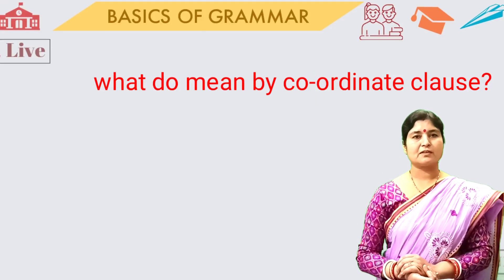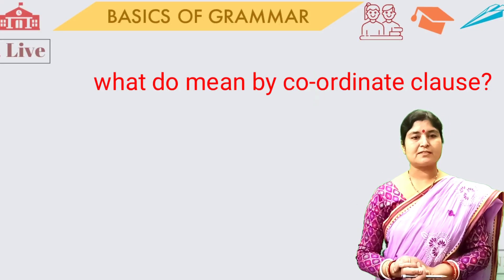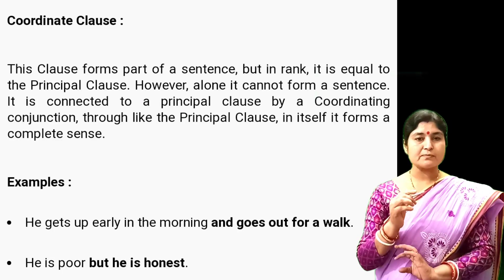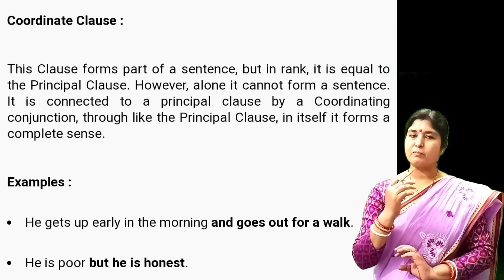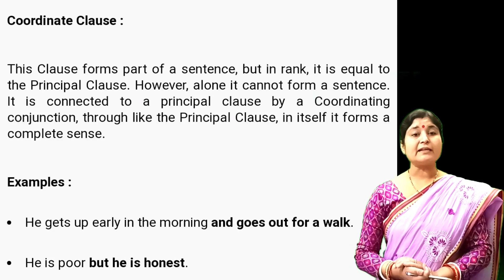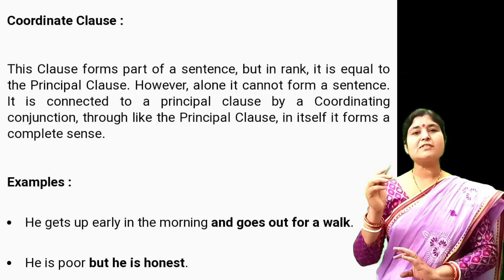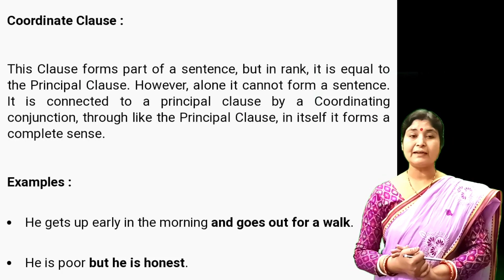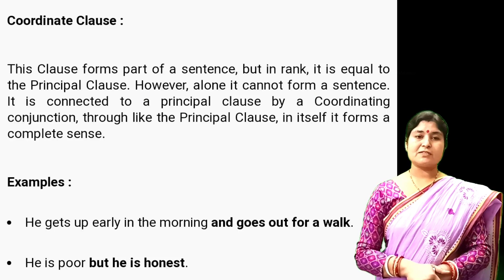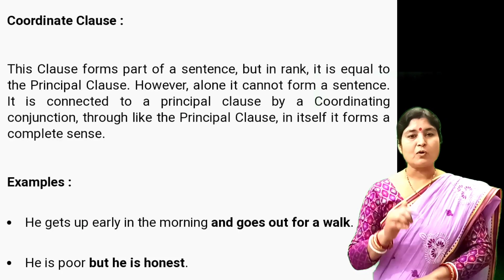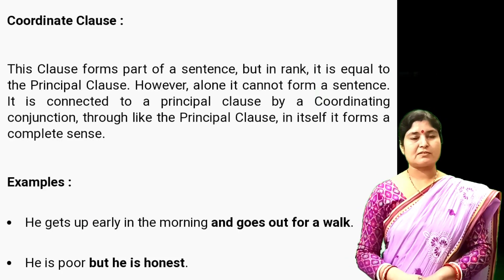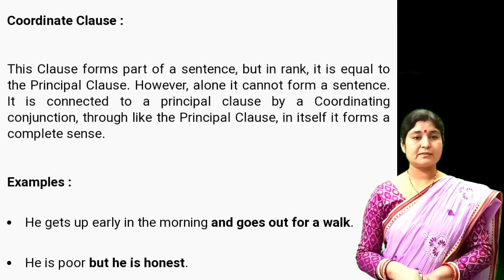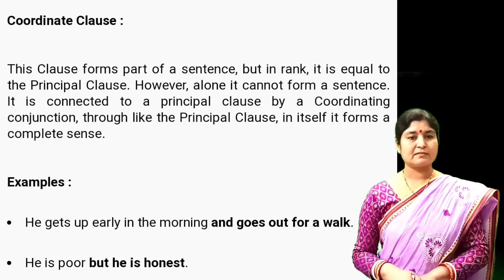So what is the Co-ordinate Clause? A sentence which is made of two or more principal or main clauses is called a compound sentence, and the clauses of a compound sentence are known as Co-ordinate Clauses. The co-ordinate clauses of a compound sentence are joined by co-ordinating conjunctions such as: but, and, so.